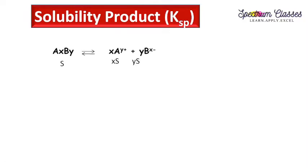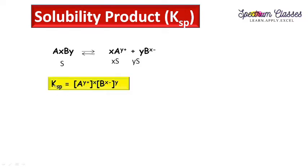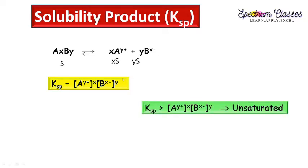The solubility product concept is applicable for sparingly soluble salts, and these salts dissociate in equilibrium. Here is the equilibrium sign and the solubility product constant Ksp. This Ksp is equal to the concentration of ion A raised to the power of its coefficient, multiplied by ion B raised to the power of its coefficient. This is the solubility product formula.